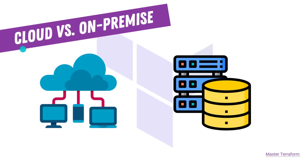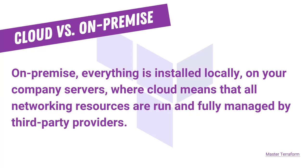When it comes to building the corporate network infrastructure, there are two main possibilities: cloud and on-premise. Essentially, the fundamental difference between cloud and on-premise infrastructure is where the infrastructure resides. On-premise, everything is installed locally on your company servers, whereas cloud means that all networking resources are run and fully managed by third-party providers.